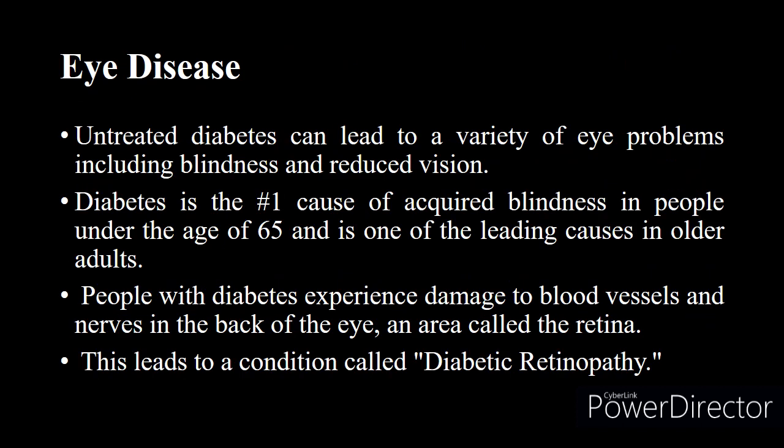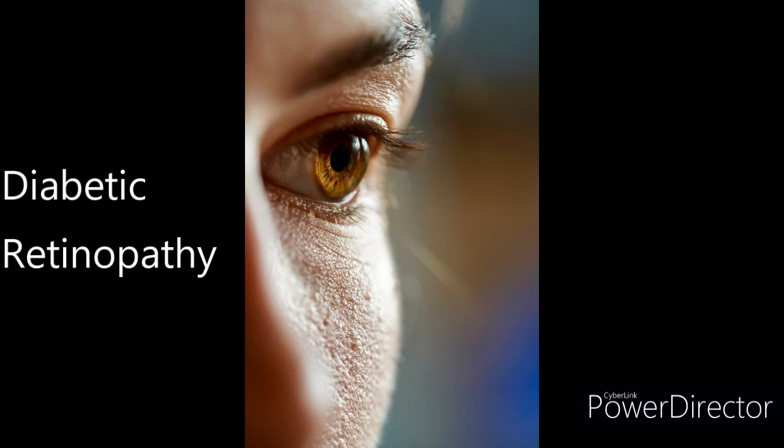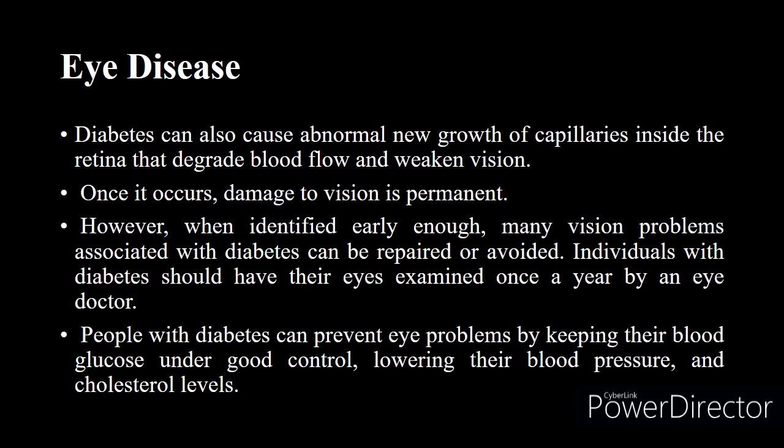The second complication is eye disease. Untreated diabetes can lead to a variety of eye problems including blindness and reduced vision. Diabetes is the number one cause of acquired blindness in people under the age of 65 and one of the leading causes in older adults. People with diabetes experience damage to blood vessels and nerves in the back of the eye — the retina — leading to a condition called diabetic retinopathy. It can also cause abnormal new growth of capillaries inside the retina that degrades blood flow and weakens vision, and once it occurs, the damage is permanent.